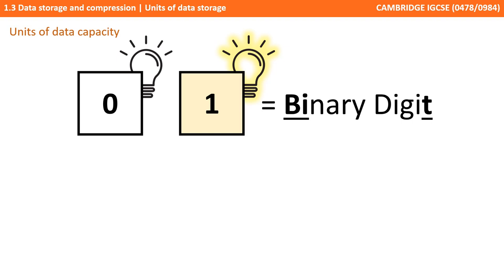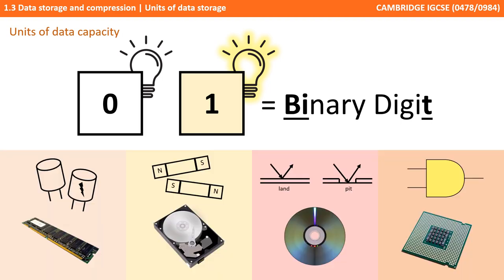We already understand that everything stored in a computer system is stored in binary — those zeros and ones that represent just two states. For example, capacitors that store a charge or don't store a charge in RAM to represent a 1 or a 0, magnetic north and south poles in hard drives, pits and lands on Blu-ray discs, current or no current with logic gates. This is because it's much easier, and therefore cheaper, to manufacture electronic component units with just these two states.